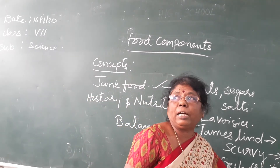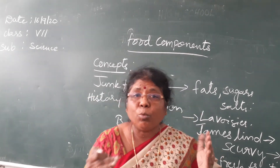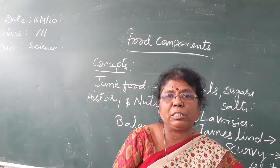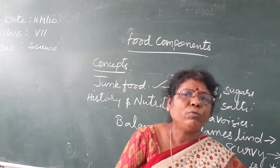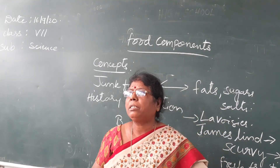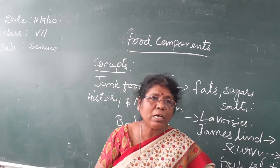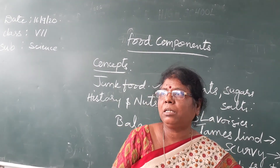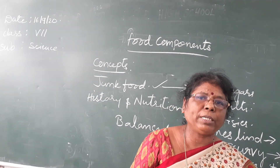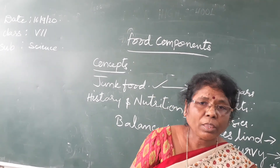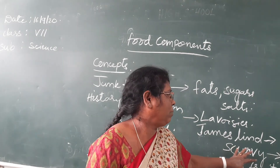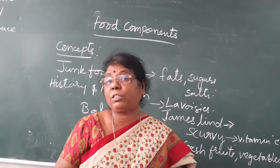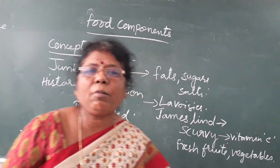Our body mostly depends on carbohydrates, fats, and proteins. These three are the major components of food. Fats — nowadays everyone avoids taking too much because of health issues. So this is the chapter completed. Now you have to paste pictures of junk food and write what are the harmful effects of junk food.